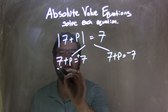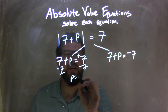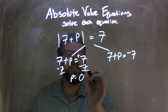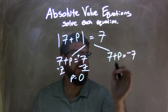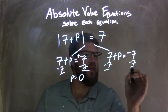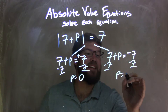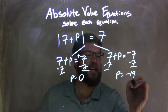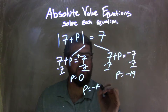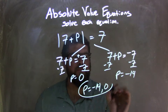So, I'm going to subtract 7 from both sides here, leaving me with just P equals 0, because 7 minus 7 is 0. And here, I subtract 7 from both sides, but in this case P equals negative 7 minus 7, which is negative 14. So our final answer is P equals negative 14 and 0.